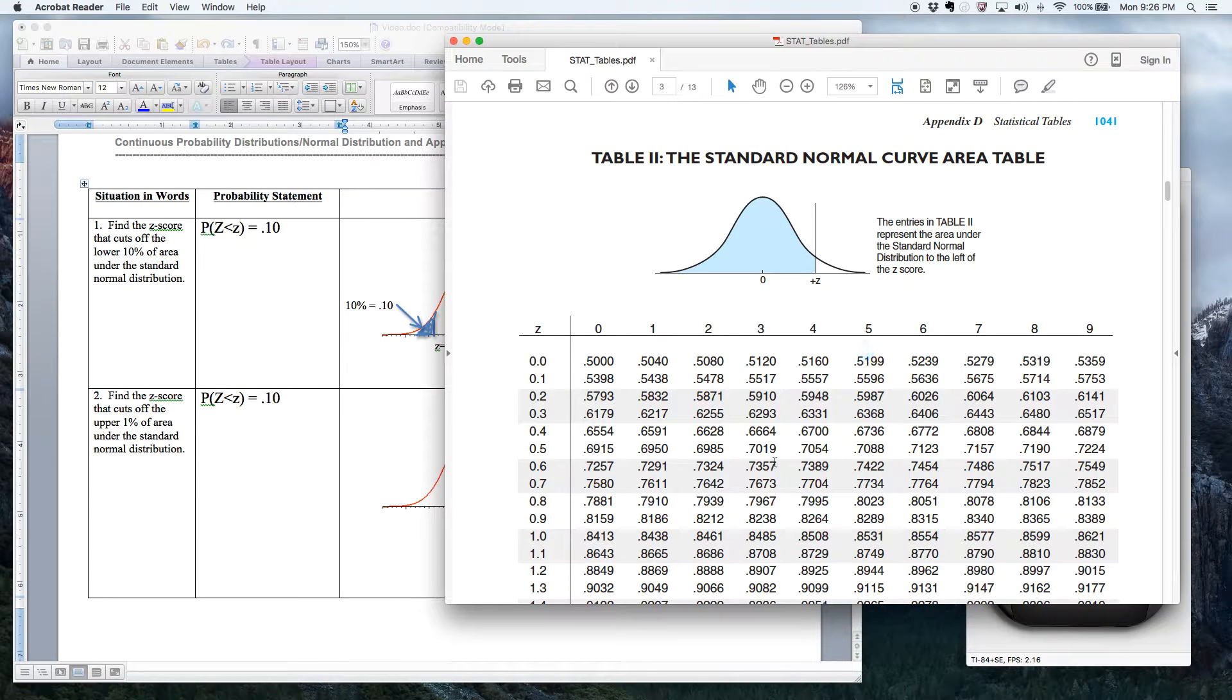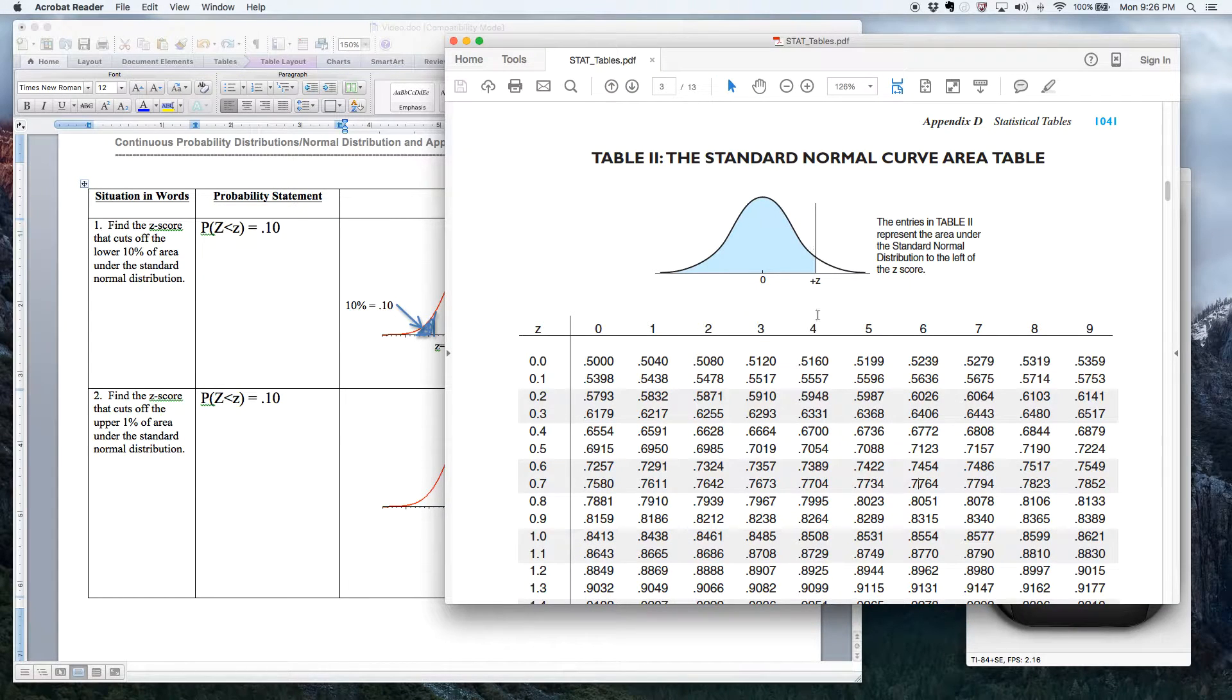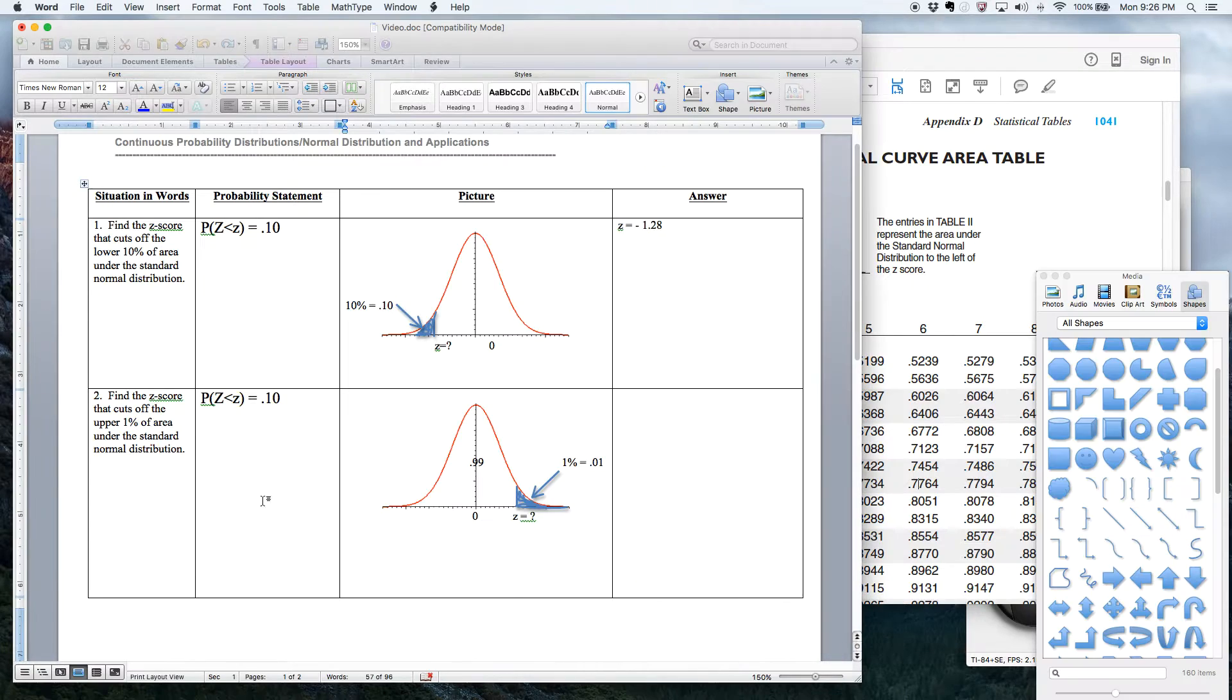So in fact, when I go to this table right here and start looking up my area, I am not going to look up .01. I'm going to, in fact, be looking up .99. Now you say, well, how come? Well, because once again, this table only gives areas on the left. So when I use inverse normal, I have to remember that and always use the area that's on the left. Even when the question gives me an area on the right, I still have to look up the one on the left.